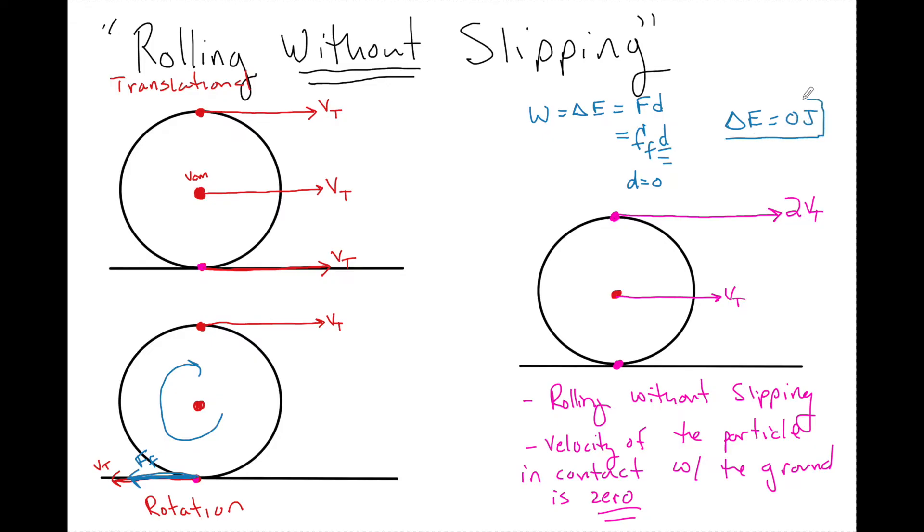Does this force of friction do work? Because work, which is equal to a change in energy is equal to F times D. So I have this force of friction times D, but what's the distance traveled if it does not slip? D is equal to zero. So we see that when it does not slip, the delta energy is equal to zero joules. And that's what makes this such a special case.